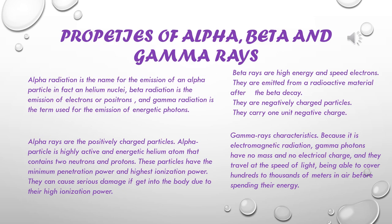Properties of alpha, beta, and gamma rays. Alpha radiation is the emission of an alpha particle. Beta radiation is the emission of electrons or positrons. Gamma radiation is the emission of energetic photons. Alpha rays are positively charged particles. An alpha particle is a highly active and energetic helium atom containing two neutrons and two protons. These particles have minimum penetration power and highest ionization power. They can cause serious damage if they get into the body due to their high ionization power.